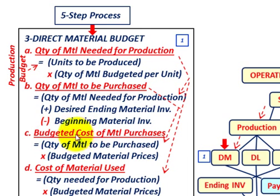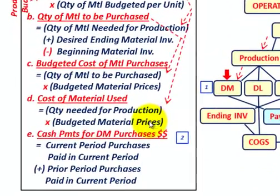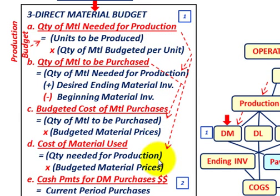For step C, the budgeted cost of material purchases: take the quantity of material to be purchased from step B, times the budgeted material prices. Step D is the cost of material used, which equals the quantity needed for production from step A, times the budgeted material prices. Finally, step E covers cash payments for direct material purchases, which equals current period purchases paid in the current period, plus prior period purchases paid in the current period.